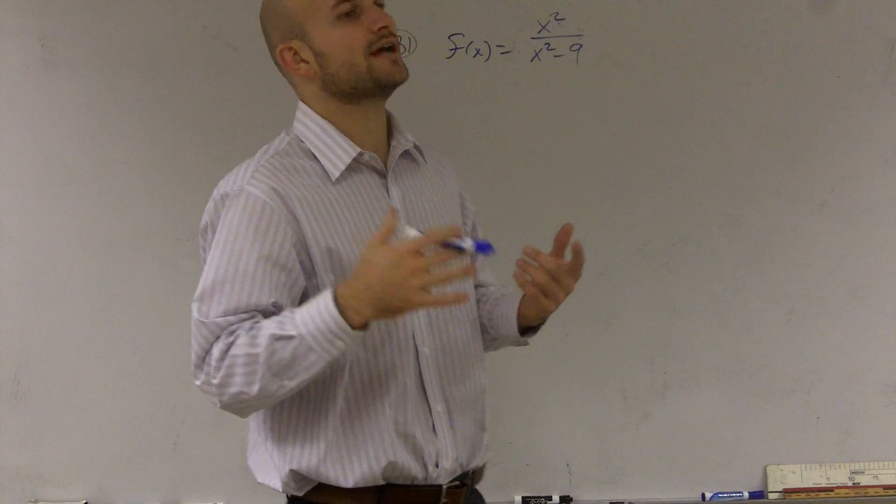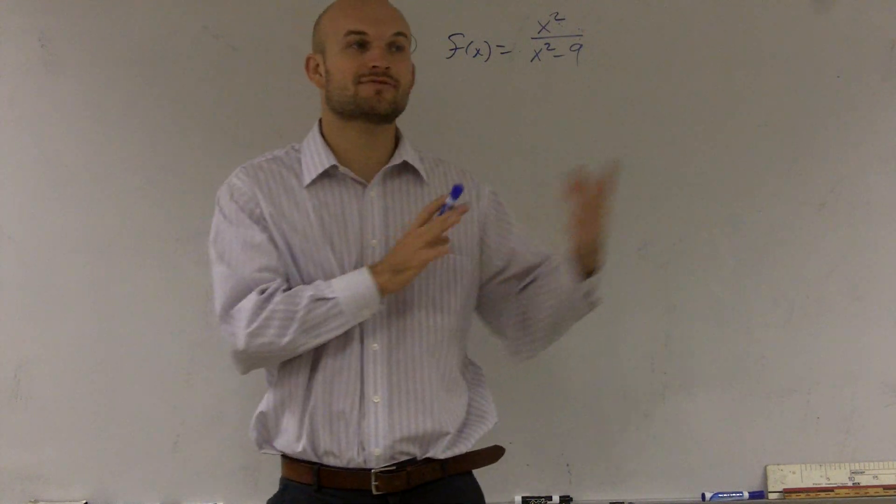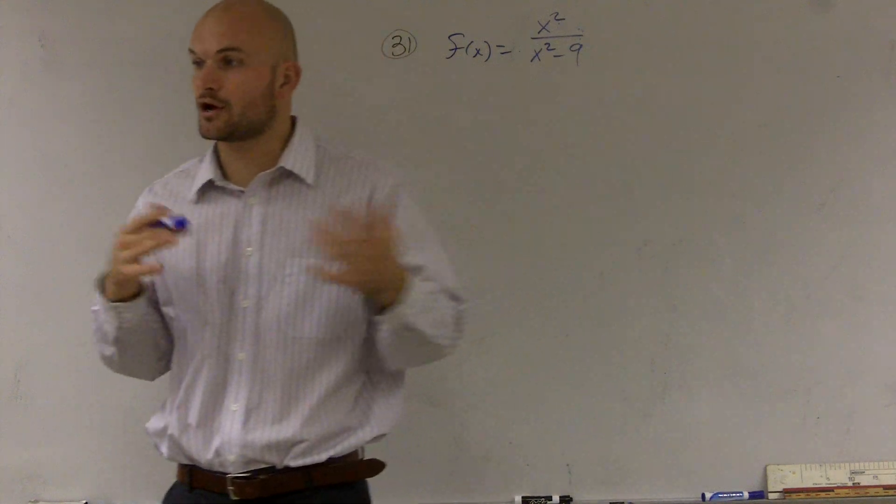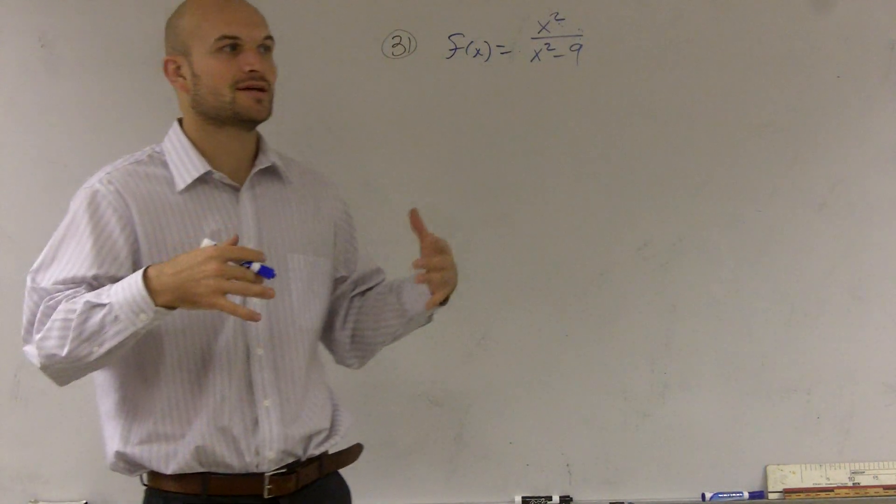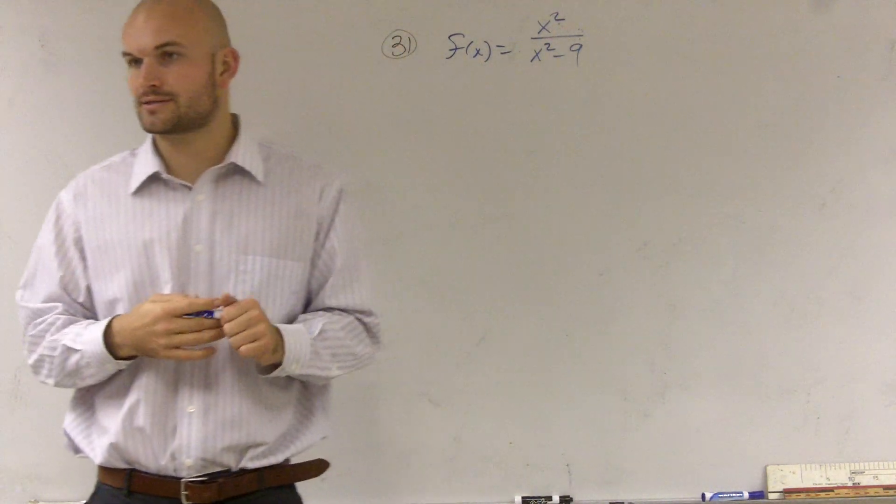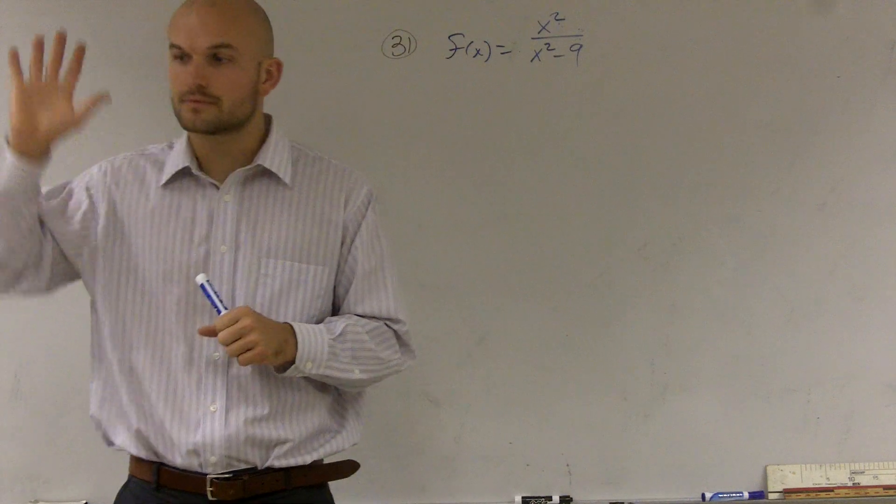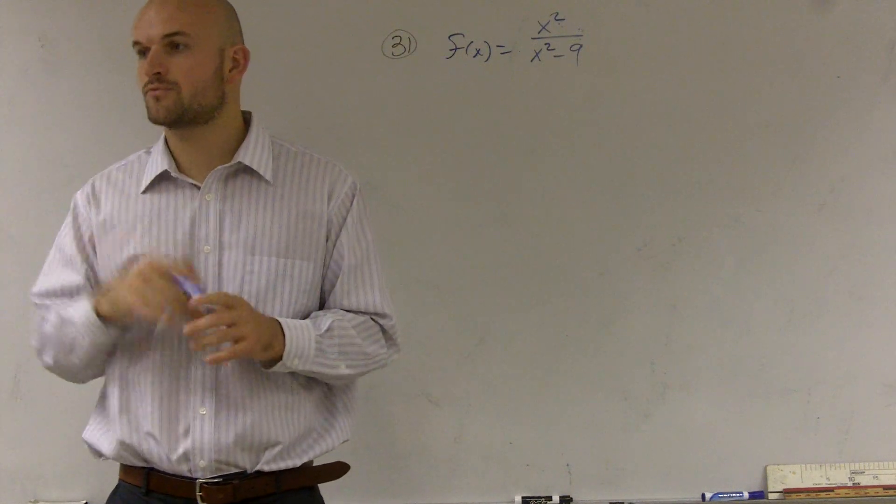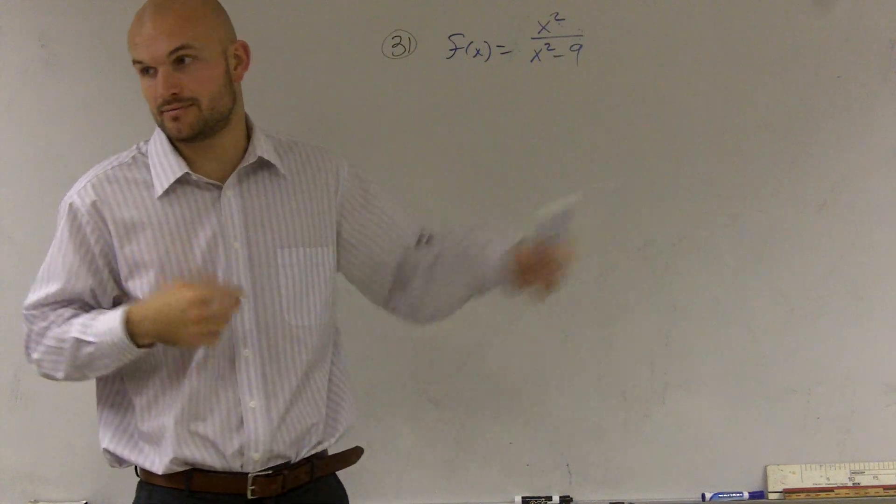They need to find the vertical, the horizontal, the slant if it's applicable, the x and y intercepts, and then they want us to graph it. So I'm going to take you through all the points that we need to do to have a graph.